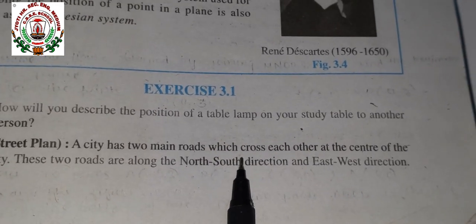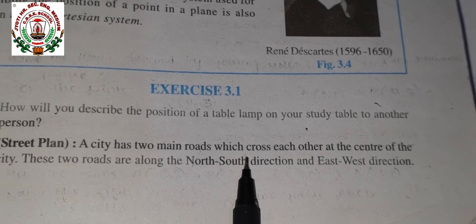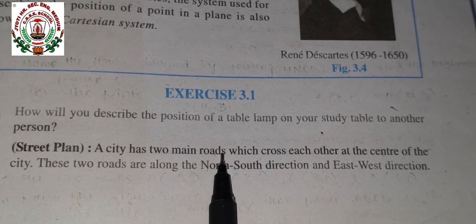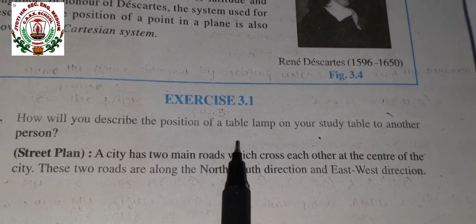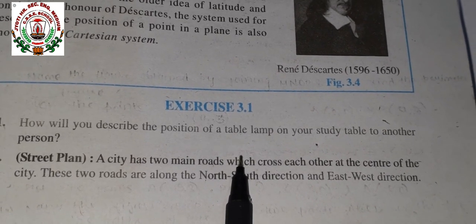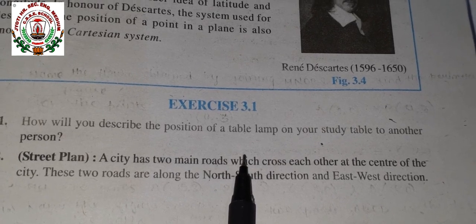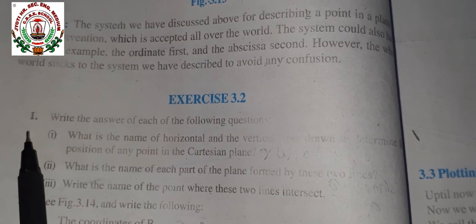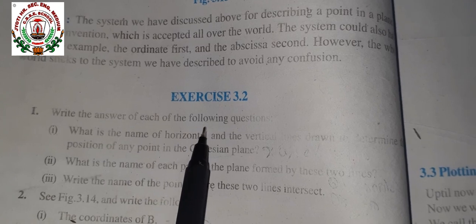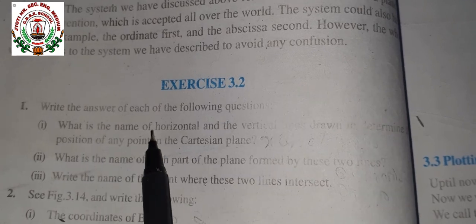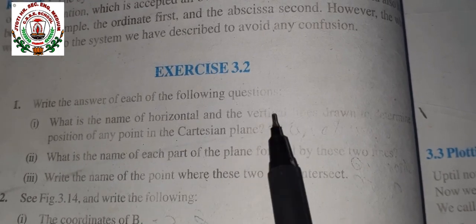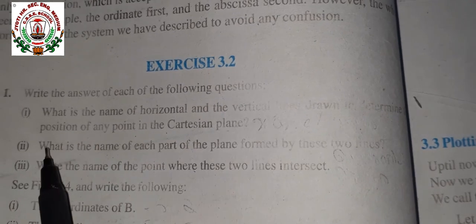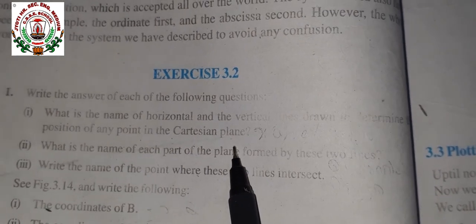Do these two questions in your copy using graph paper, and if you are not able to do it or have any doubt, when the school reopens you may clear your doubts. Now let us start Exercise 3.2. First question: write the answer of each of the following questions. What is the name of the horizontal and the vertical line drawn to determine the position of any point in the Cartesian plane?